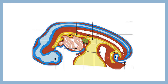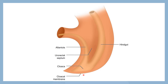To remember: the cloacal membrane is a bilaminar membrane and there is no invagination of the mesoderm. The primitive streak which is present behind the hindgut — the mesodermal cells migrate through this and enter into the ventral wall, forming the infraumbilical part of the abdomen. The cloacal membrane is also limited on either side by the elevation of the genital tubercle.